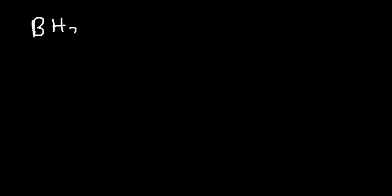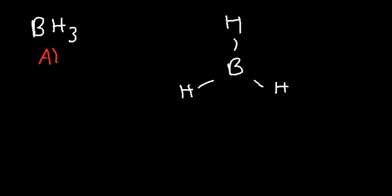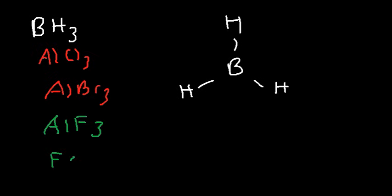Molecules with a trigonal planar structure, like BH3, are nonpolar as well — there are no lone pairs on the center atom. Other compounds in this category include AlCl3, AlBr3, AlF3, and FeBr3. As individual units, these compounds are nonpolar.